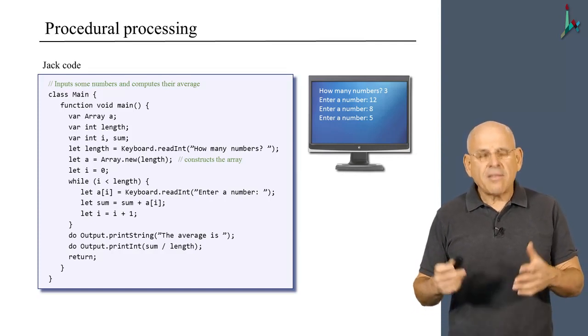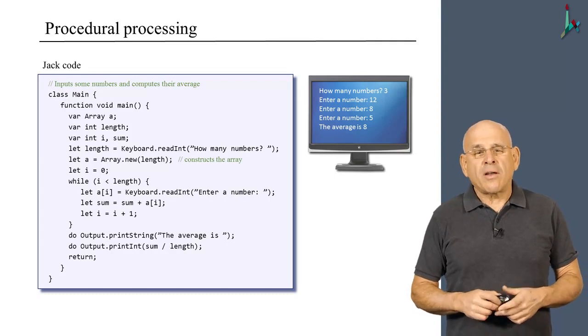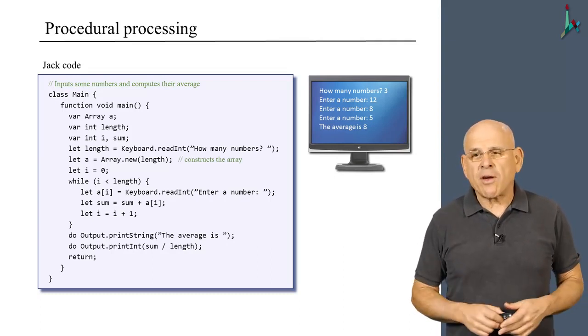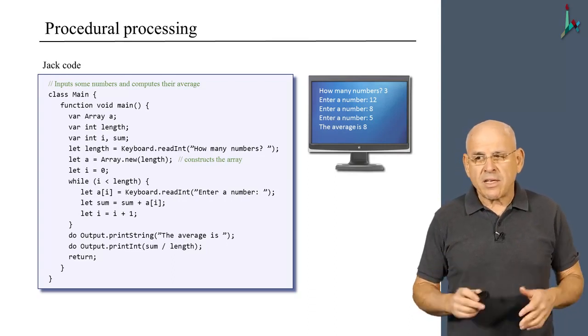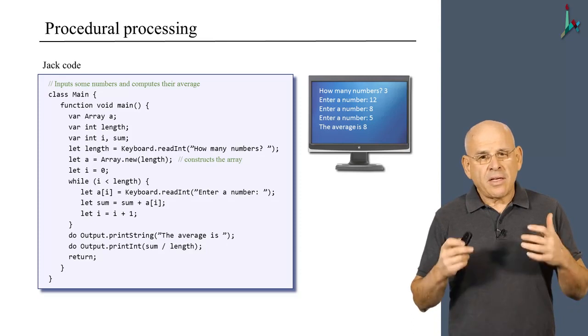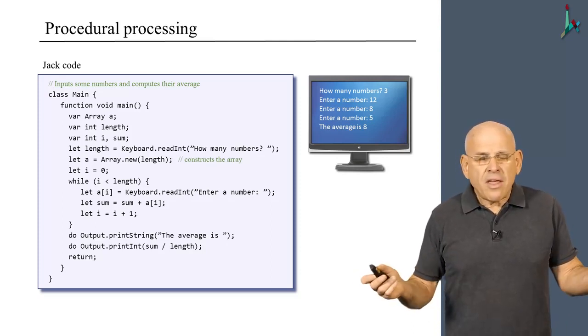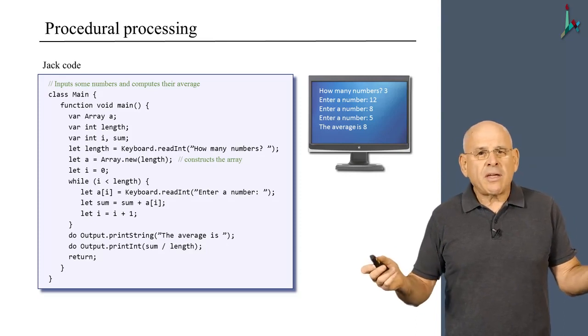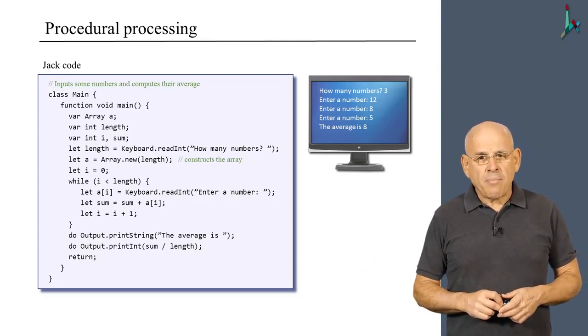which makes sense because in Jack, or in this program and in Jack in general, we deal only with integer data types when it comes to numbers. So what we've seen here is an example of procedural processing.